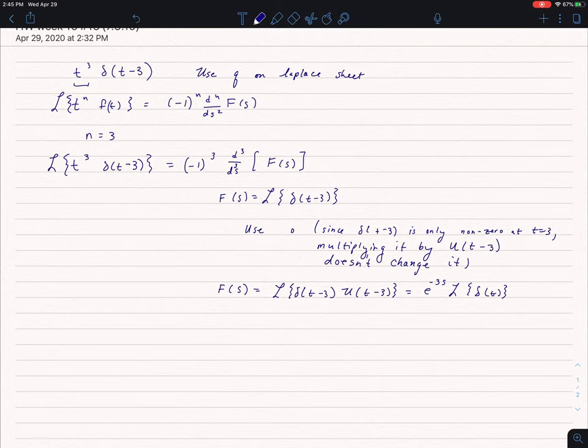So when I do that, I find that the Laplace transform of delta t minus 3 is e to the negative 3s times the Laplace transform of delta t. That's just equal to 1, so the Laplace transform of delta t minus 3 is simply e to the negative 3s.